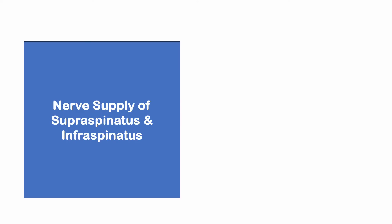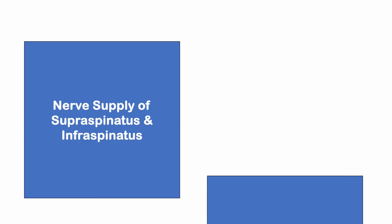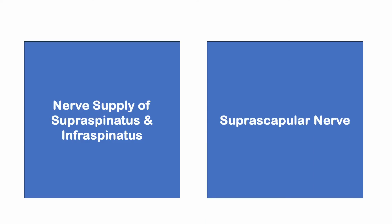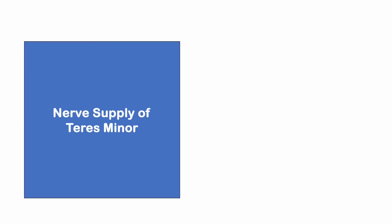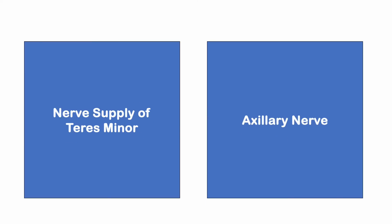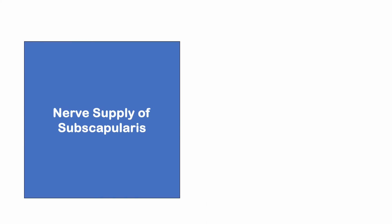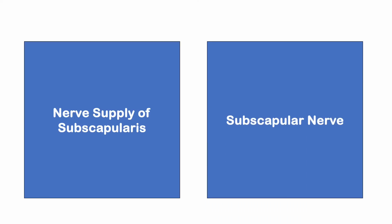The nerve supply of supraspinatus and infraspinatus is the suprascapular nerve. The nerve supply of teres minor is the axillary nerve. The nerve supply of subscapularis is the suprascapular nerve. You need to remember these.